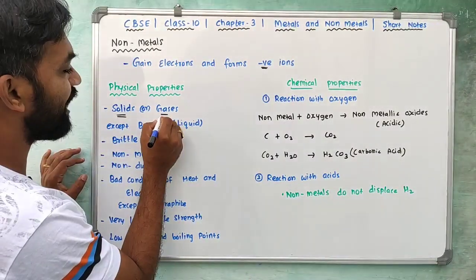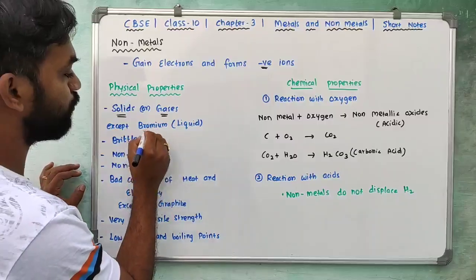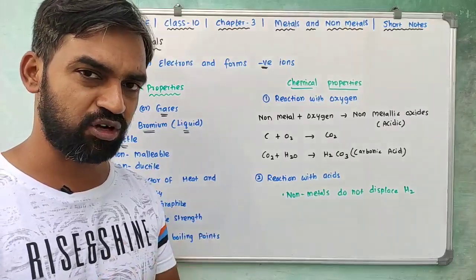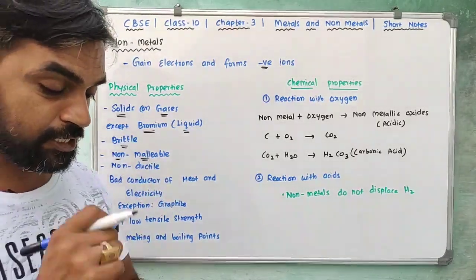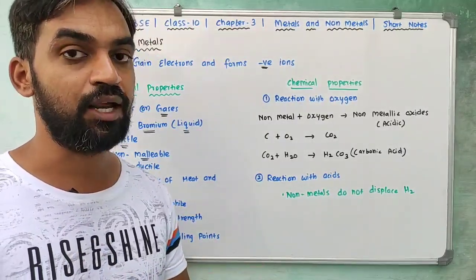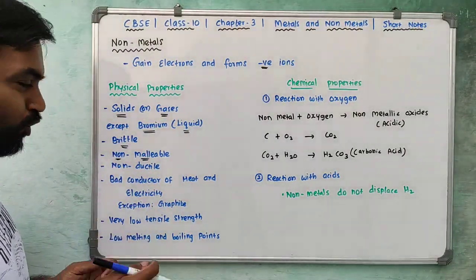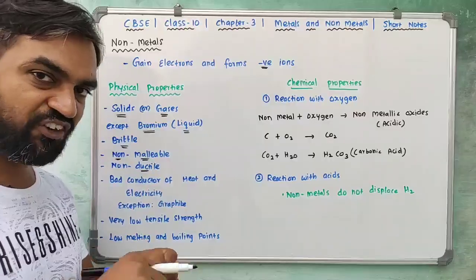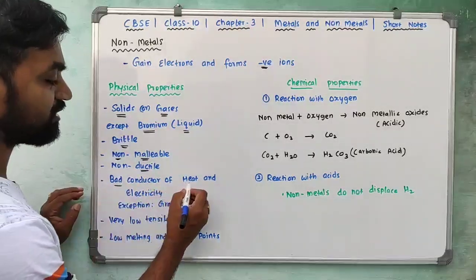Non-metals are mostly solids or gases. The exception is bromine, which is a liquid. Non-metals are brittle and non-malleable. They are bad conductors of heat and electricity — for example, plastic and rubber do not conduct electricity.